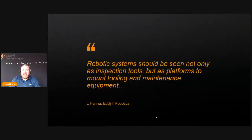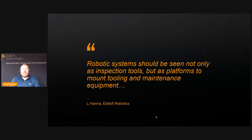One of the comments I made in a presentation around 18 months ago is that we constantly look at robots as inspection tools, which is fine, but actually we should look at robots much more as platforms to mount tooling, maintenance equipment, and inspection equipment for multiple tasks. Essentially a robot is designed to take a human out of a dangerous environment. There's no reason we can't add multiple sensor technologies to carry out inspections.